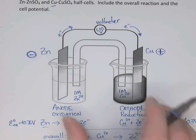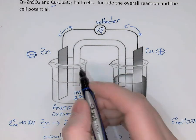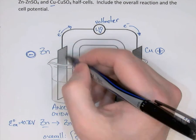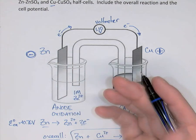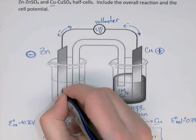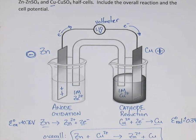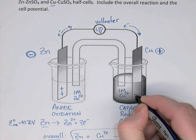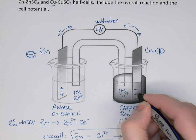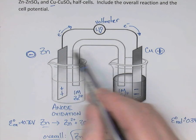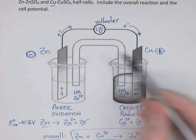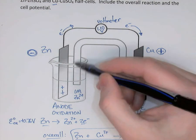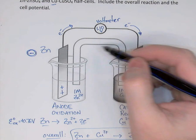If we examine what happens inside the cell, when you lose electrons you actually become positively charged, so the inside of the anode half cell has a positive charge. When electrons flow into the cathode, it acquires a negative charge inside. So the labels on the outside of the battery are actually the opposite of the actual charges inside the battery.